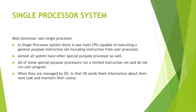Now talking about single processor systems. A single processor system is the simplest type, in which every computer system has its own processor. There is one main CPU capable of executing general-purpose instructions. Almost all systems have other special-purpose processors as well. All of these special-purpose processors run a limited instruction set and do not run user programs. When managed by the OS, the OS sends them information about their next task and monitors their status.